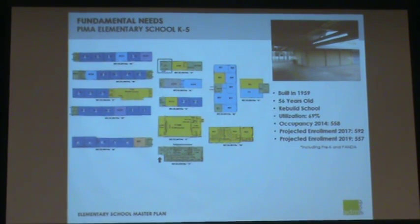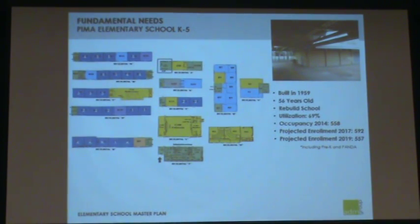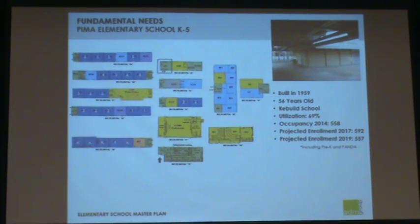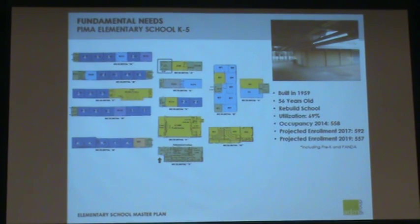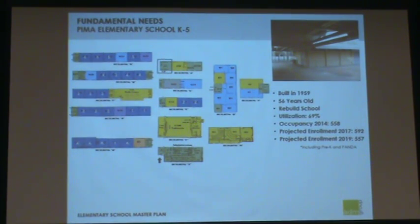Pima Elementary School, K-5, was built in 1959 — it's 56 years old and another candidate for a possible rebuild. Utilization is 69%. The enrollment in November 2014 is 558. Applied Economics projects enrollment to go up to 592 in 2017 and drop to 527 in 2019.